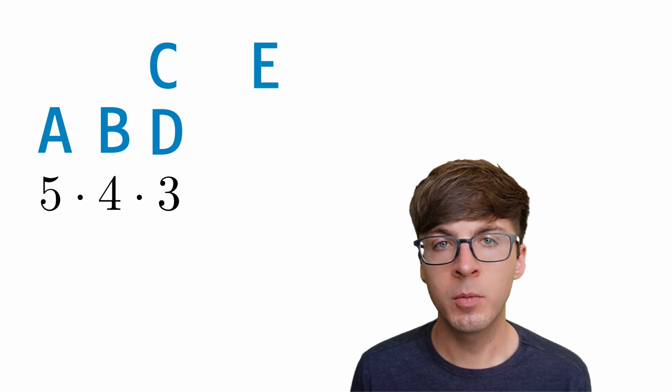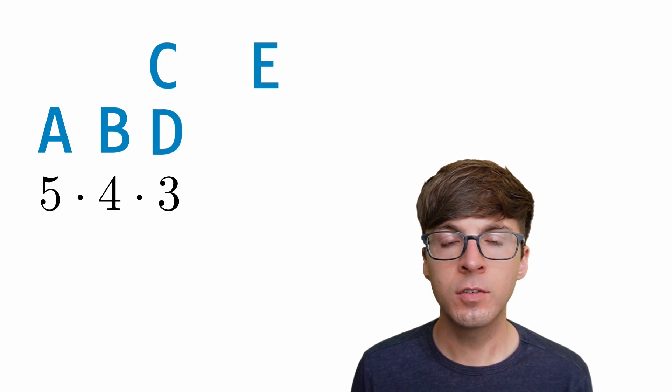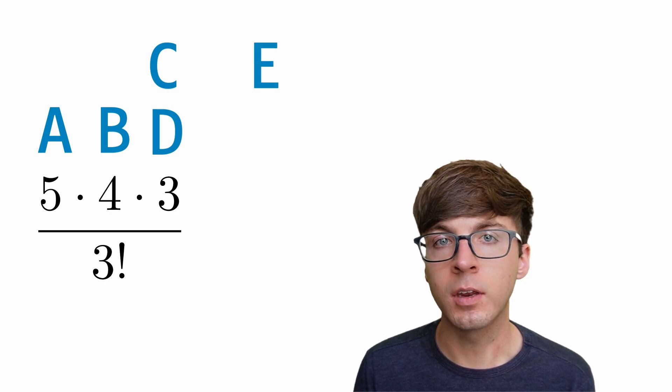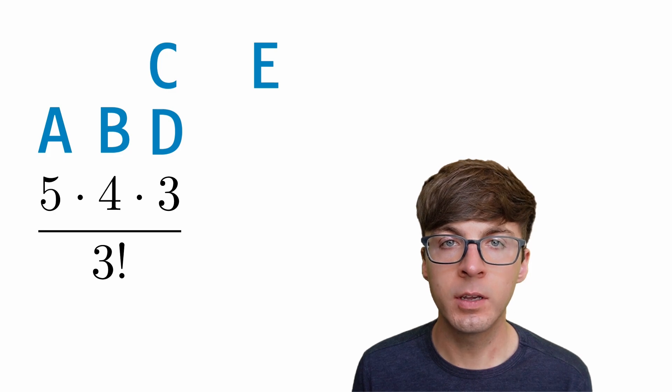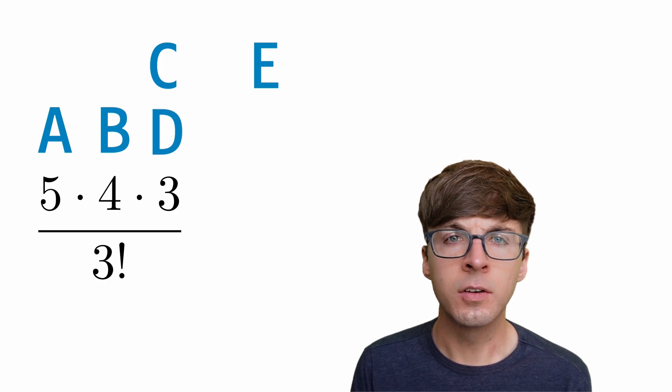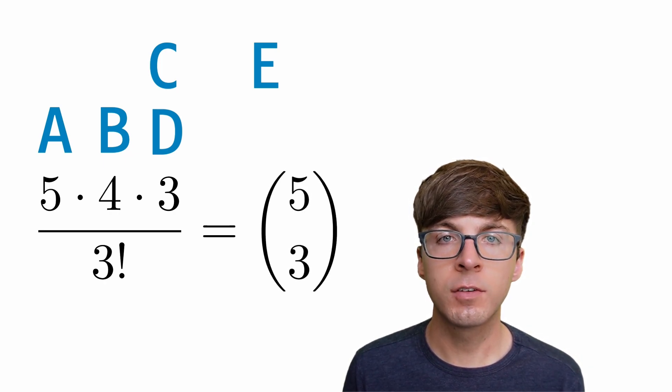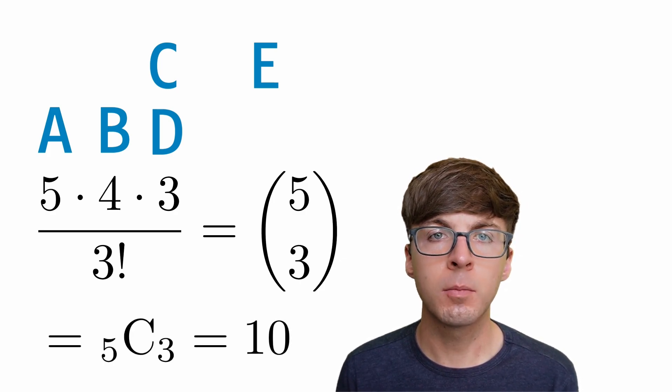The third tool is called combinations. Again we have the letters A through E and we want to pick three of them, but this time we don't care about the particular order — only which three letters are picked. We can start with the permutation five times four times three, which counts ordered selections, but since we don't care about order we've overcounted by a factor of three factorial — the number of ways to rearrange three distinct letters. So we divide the permutation by three factorial. This gives us five choose three, which is often written in combination notation.